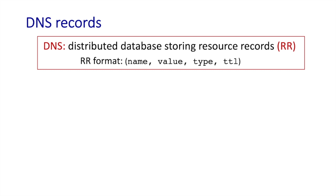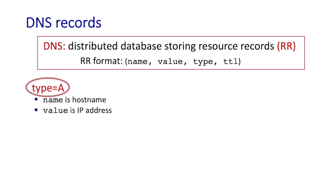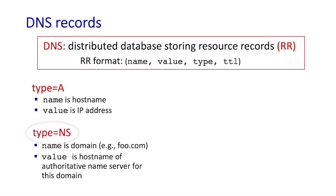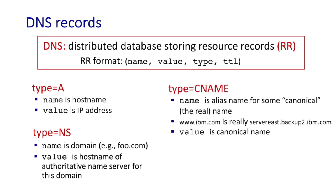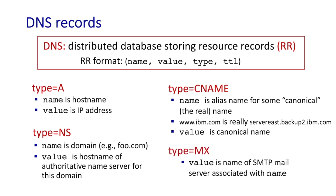DNS database records are a 4-tuple with name, value, type, and TTL fields. There are several popular record types. When the type is A — an address record — the record contains a host name and its IP address, used for name-to-address translation. When the type is NS — a name server record — the name is a domain like umass.edu and the value is the host name of the authoritative name server for that domain. A CNAME record is used for name aliasing, and an MX record gives the name of a mail server associated with a domain.